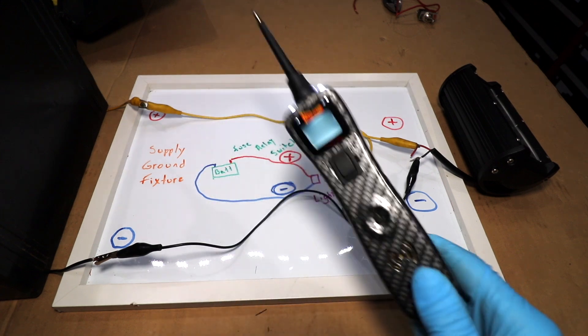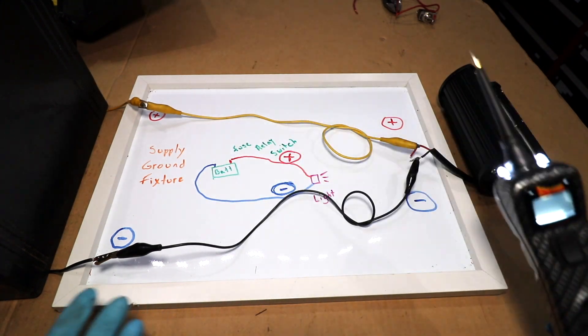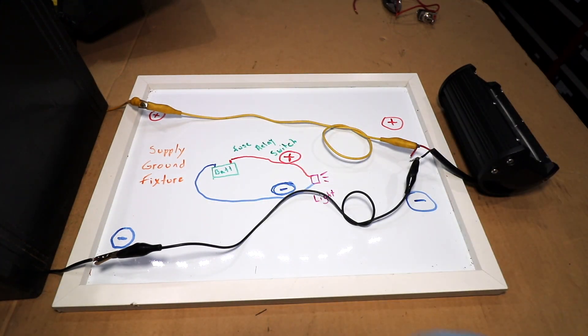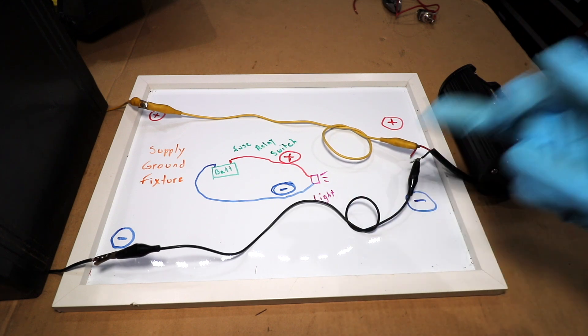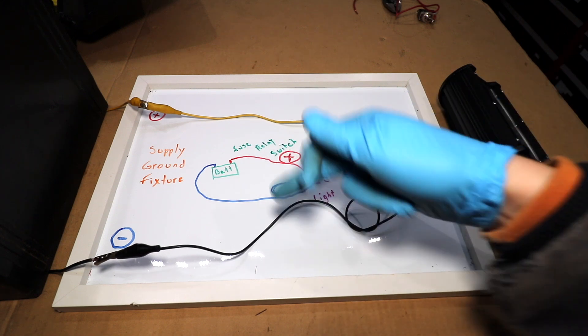And now the fun part, now we get to utilize the Power Probe to troubleshoot some basic 12 volt electrical faults. Now in order for a 12 volt circuit to function properly, we need to have a complete loop.